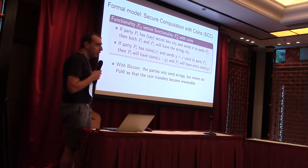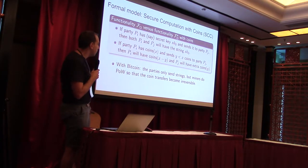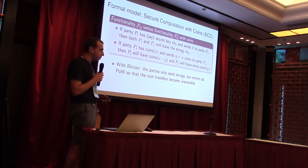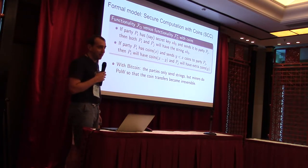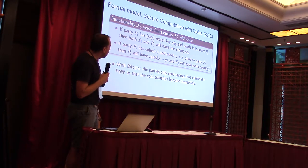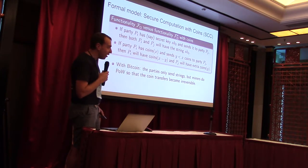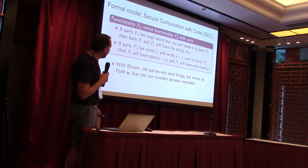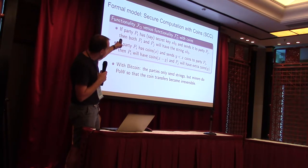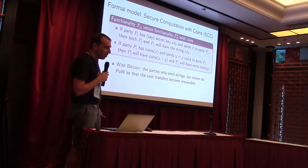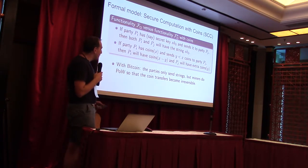We have a formal model for secure computation with coins, and we do simulation proofs in this model. There are also other academic works with similar models. We use ideal functionalities: an F functionality is like a standard functionality without coins, and F-style is the functionality with coins — the superscript stands for "claim refund" (CR).